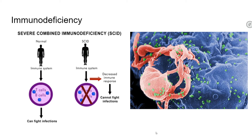The first example is called severe combined immunodeficiency, or SCID. This is a genetic defect with a deficit in B cells and T cells — or it could be B cells or T cells, depending on the specific issue. Basically, if you don't have those cells, your immune system is not able to fight infection. If you have a low B cell count or a low T cell count, your immune system is going to be compromised.